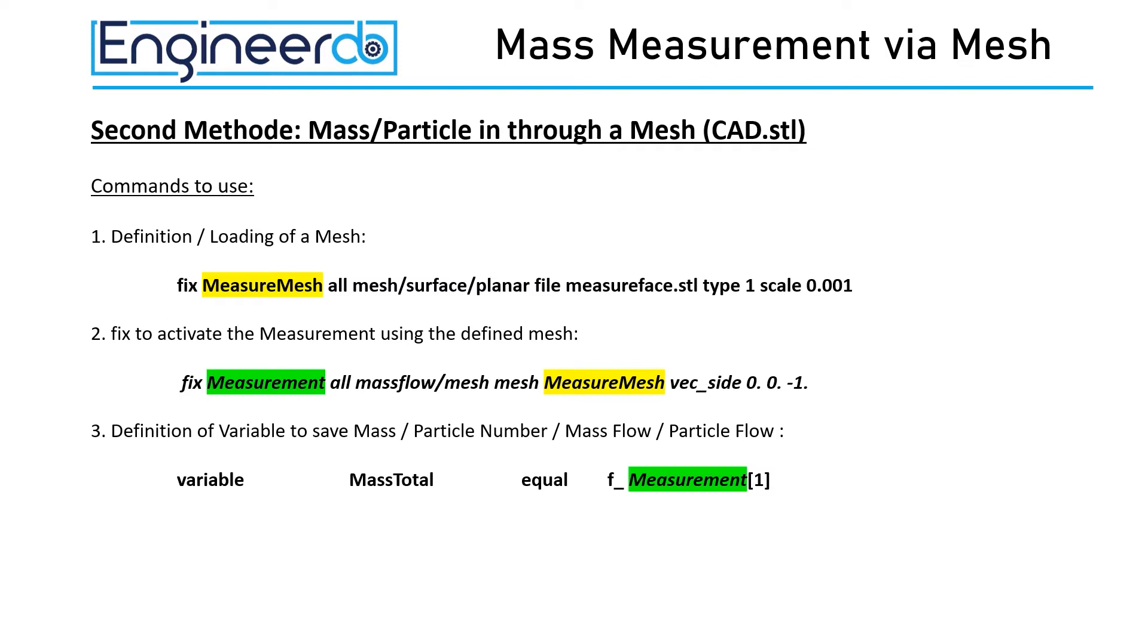To access this field we have to use F underline measurement bracket open one bracket close. We repeat this procedure to save the total number of particles from field 2, the mass flow rate from field 3 and the particle rate from field 4.